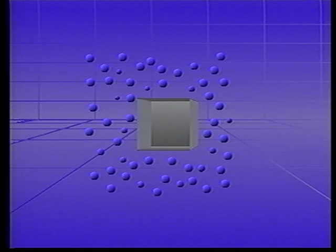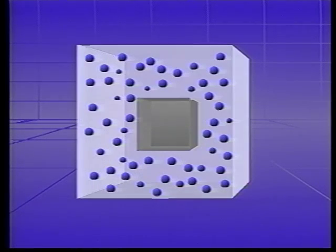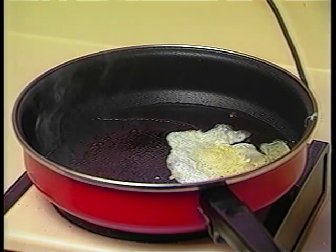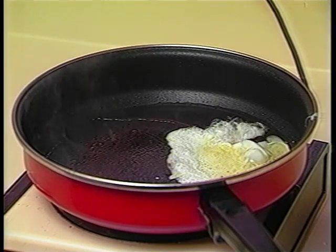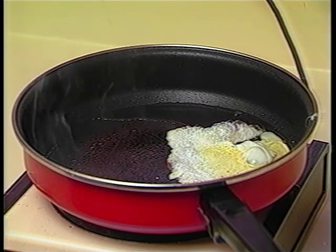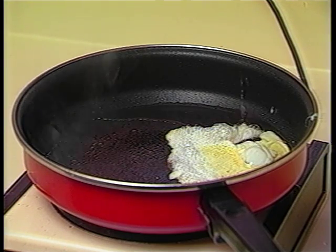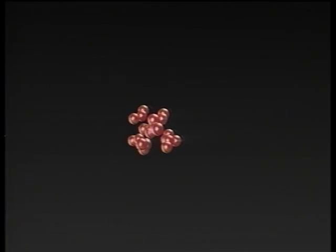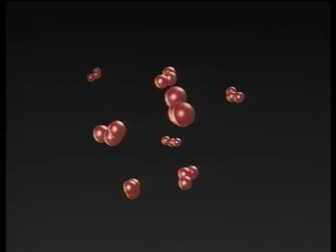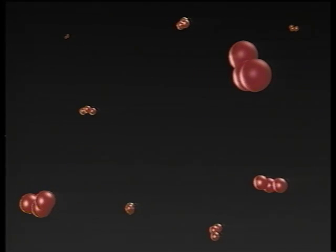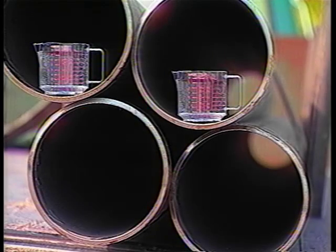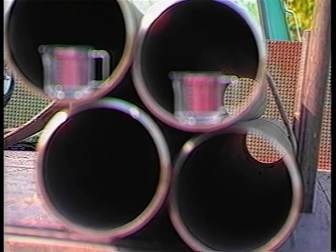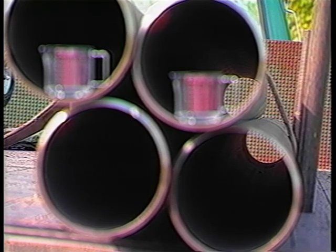When a substance vaporizes, its specific volume increases greatly. When grease is spattered from a hot pan, it is the result of water droplets in the grease reaching the heat of vaporization and suddenly exploding into steam. At standard pressure, steam occupies approximately 1,600 times the volume of water. Whereas one pound of water occupies two cups, one pound of steam fills more than 77 feet of 8-inch pipe.